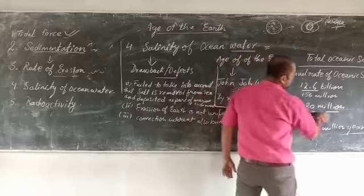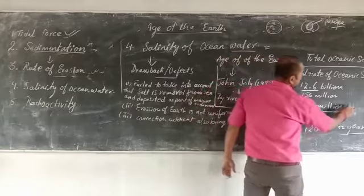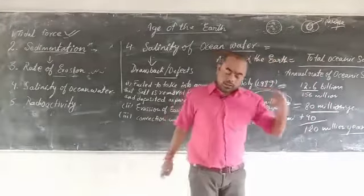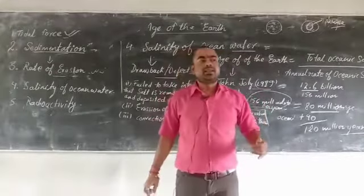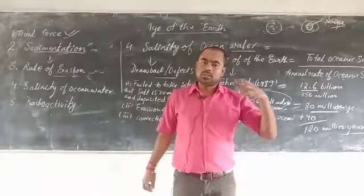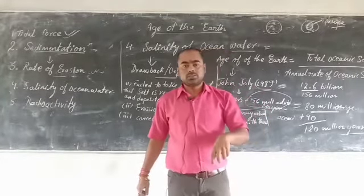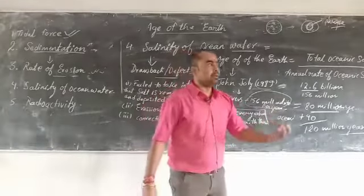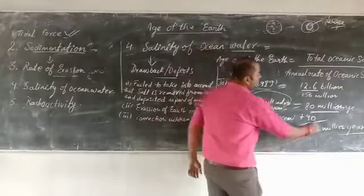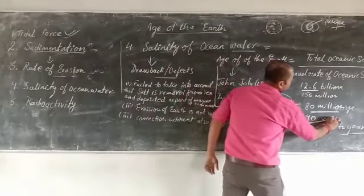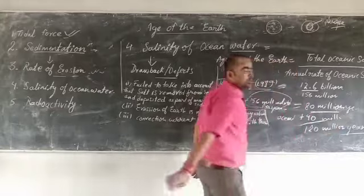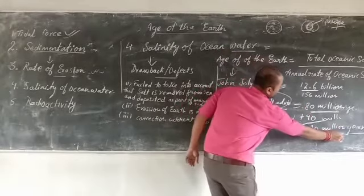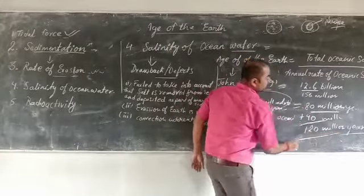It is believed that the ocean came into existence about 40 million years after the formation of the earth. So 80 million plus 40 million gives us 120 million years. According to this method, the age of the earth is 120 million years.